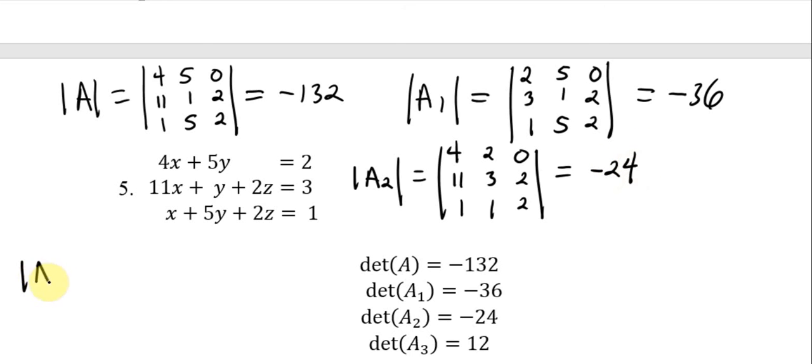Then the last one, the determinant for A sub 3. We replace this third column with 2, 3, 1, and we get 12.